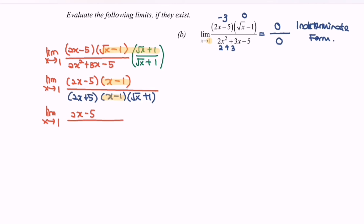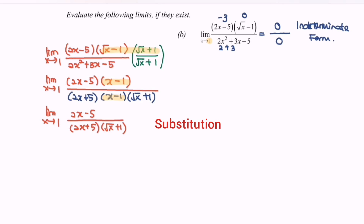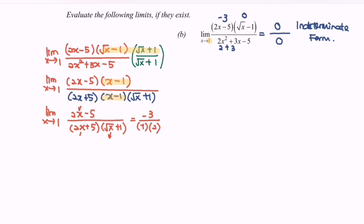Now we substitute the value x = 1 into the simplified function. The numerator gives 2 minus 5, which equals negative 3. For the denominator, 2 plus 5 gives 7, multiplied by (√1 + 1) which equals 2.